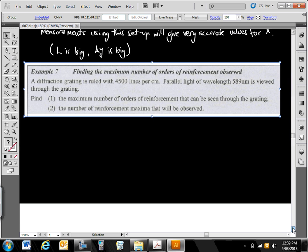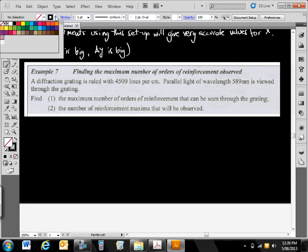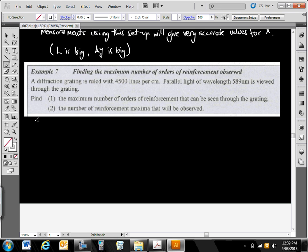Have a go at that. A diffraction grating is ruled with 4,500 lines per centimeter. I'll just remind you how you measure what D is from that. Some people will have forgotten. Have a go, please.